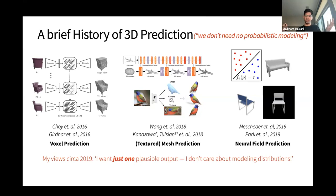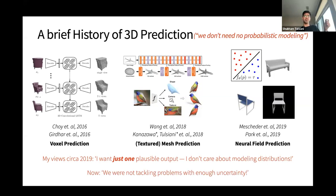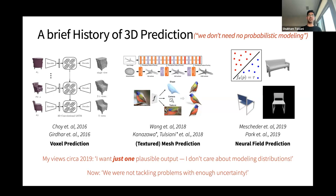Around 2019–2020, it was also my view. If given one or more images I want some 3D prediction, I'm happy if you just give me one very amazing-looking output. I don't care about samples or modeling distributions — I just want one very good output. Why should I model distributions? But today I want to tell you why that view was wrong. We were just not tackling hard enough problems with enough uncertainty, and even if you want just one plausible output, you should be modeling probabilistic distributions.